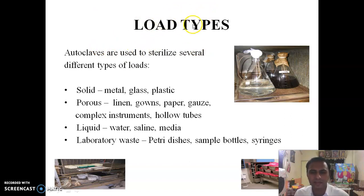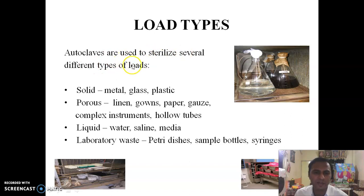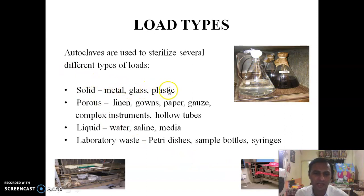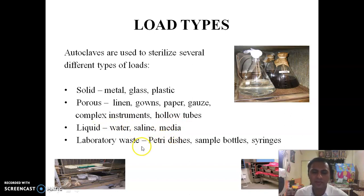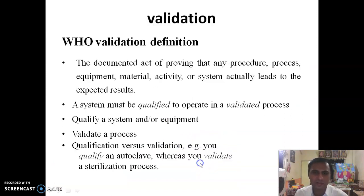Load types refer to the various samples placed in the sterilizer. Autoclaves are used to sterilize several different types of loads and materials, including: solids such as metal, glass, and plastic; porous materials such as linen, gowns, paper, and gauze; complex instruments and hollow tubes; liquids such as water, saline, and various culture media; and laboratory waste, purified water, and reagents.